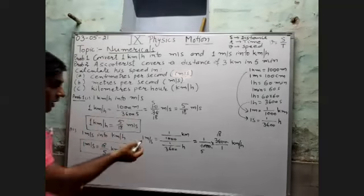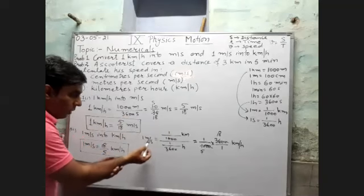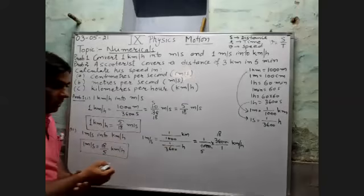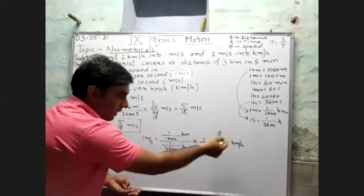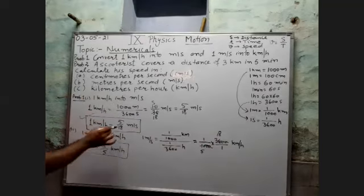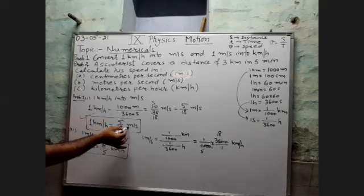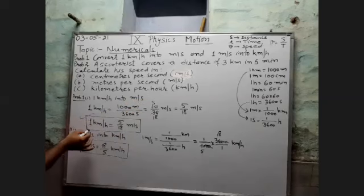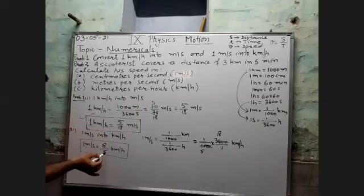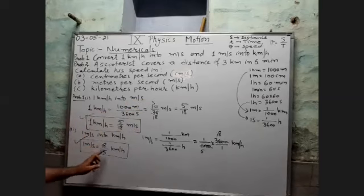This is a simple calculation that a sixth or seventh standard student can do. One meter equals 1 upon 1000 kilometer, one second equals 1 upon 3600 hour — double denominator becomes reciprocal, giving 18 upon 5. So remember: 1 km/hr = 5/18 m/s, and 1 m/s = 18/5 km/hr.